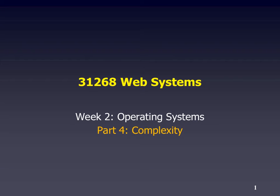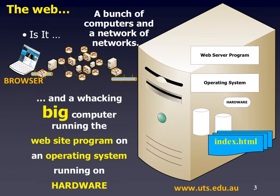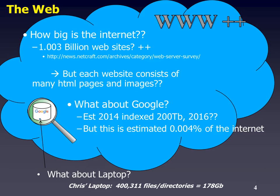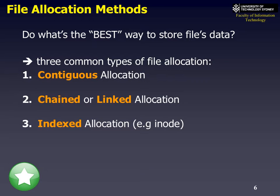Web Systems Week 2, Operating Systems Part 4: Complexity. Last lecture we looked at file systems and file storage and how files are allocated. We used this because we needed to worry about how files are stored on what size websites — Google being 200 terabytes, or even Chris's laptop at 178 gigabytes. Where do these files get stored and how do they get stored efficiently? So what's the best way to store file data?